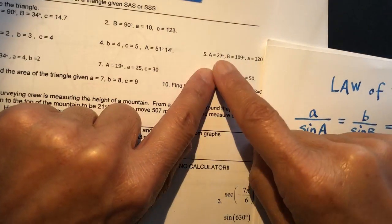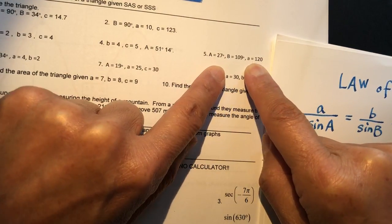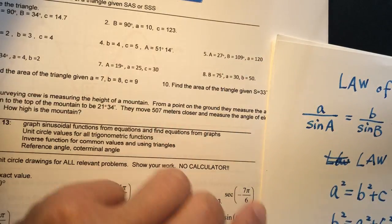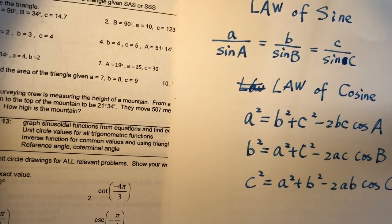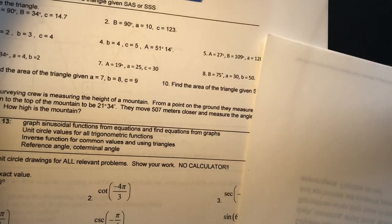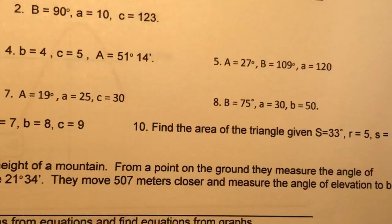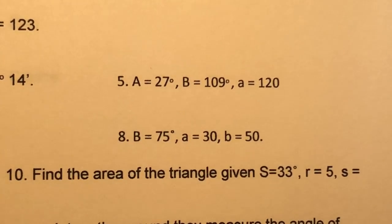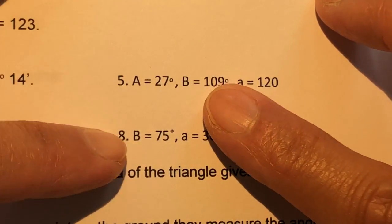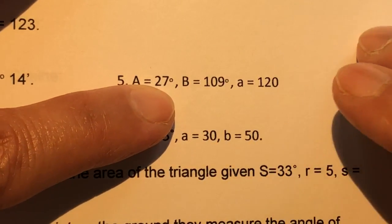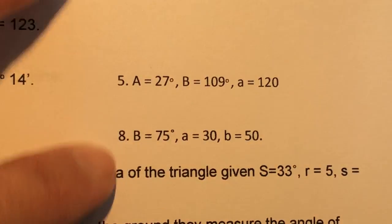We know angle A, we know angle B, and we know one side. First we will draw this triangle. I won't draw it exactly — I'll just eyeball it — so it's an acute angle and then an obtuse angle, and then the side.